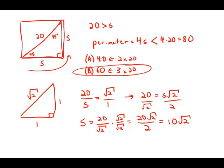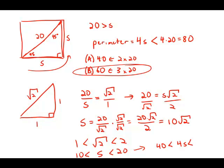We know that √2 is more than 1 and less than 2, so the side 10√2 has to be more than 10 and less than 20. That means 4 times the side — which is the perimeter — has to be bigger than 40 and smaller than 80. The only answer choice that fits in that range is answer choice B.